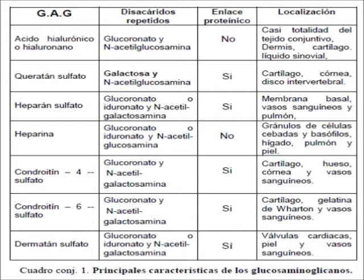Algunos proteoglucanos de interés son el sindecán — proteínas transmembrana que llevan unido un heparán sulfato y en algunos casos un condroitín sulfato — y los glipicanos, que son anclados a la membrana a través de un lípido de membrana, el fosfatidilinositol, y que contienen heparán sulfato. El ácido hialurónico no se une de forma covalente a las proteínas, por lo que no forma proteoglucanos; sin embargo, por medio de proteínas de enlace, los proteoglucanos se unen indirectamente al ácido hialurónico.